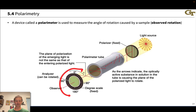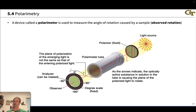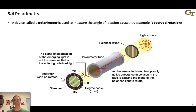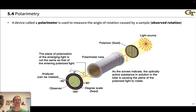We can measure this optical activity or observed rotation using a polarimeter. The extent of optical rotation depends on several experimental variables: the wavelength of the light source affects the index of refraction; the length of the tube matters, since a longer path length gives more rotation; temperature matters; and the concentration of the chiral sample matters. So observed rotation is an extensive value that depends on a number of experimental variables.